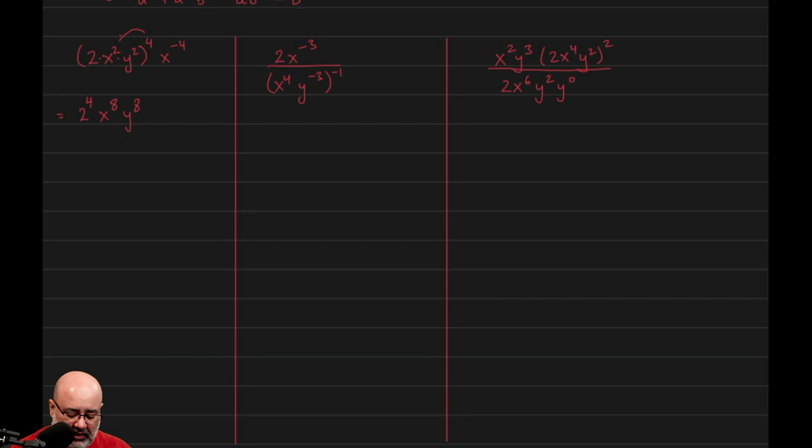And then 4 times the 2 would give us 8, 4 times another 2 would give us 8 as well. So this simplifies to that times there's still an x to the negative 4.